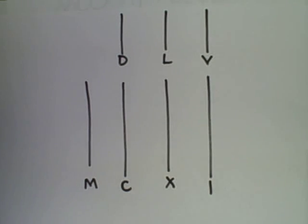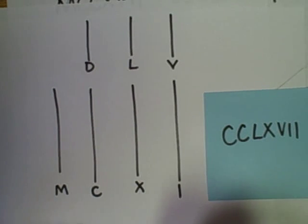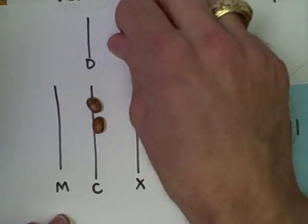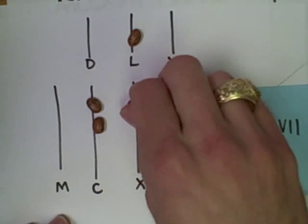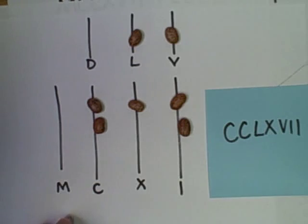Notice it sort of looks like the Japanese Soroban in terms of place values. To represent this number, 267, it's two C's, an L, X, V, and two I's. Not very difficult to represent this number.